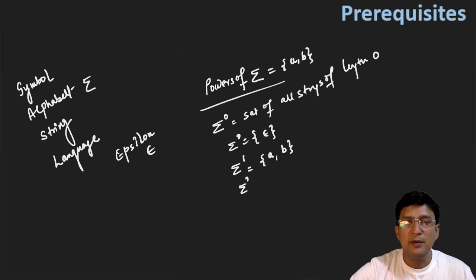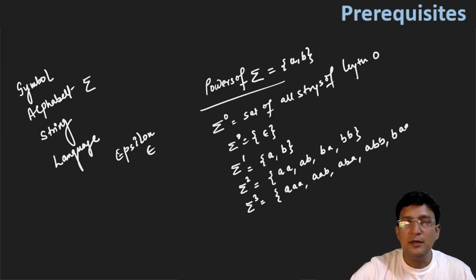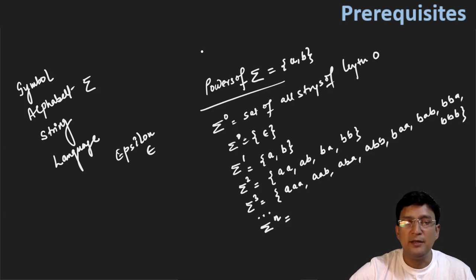Similarly, if I say sigma power two, it means it is denoting the set of all strings of length two. So which length-two strings will there be? aa, ab, ba, and bb. Similarly, sigma power three will denote set of all strings of length three. So: aaa, aab, aba, abb, baa, bab, bba, and bbb. These are all the strings which are part of sigma power three. Similarly, if I say sigma power n, the meaning of sigma power n is set of all strings of length n over sigma.